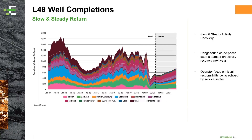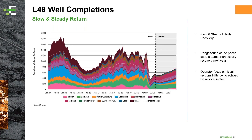DUCs do help — they will help improve capital efficiency and support 2021 — but operators are going to continue to be pressured to show good capital efficiency. Investors aren't stupid; they know the DUC inventory will run out at some point. So when that runs out, what are the different levers they can pull for cost optimization, and what tools exist to approach that data in a rigorous but consumable analytical format?